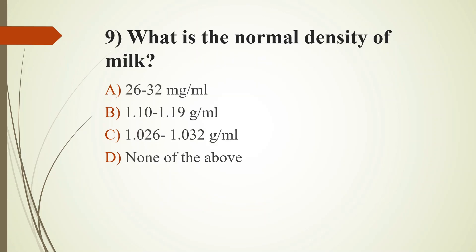Ninth question: What is the normal density of milk? Option A: 26 to 32 mg per ml; Option B: 1.10 to 1.19 g per ml; Option C: 1.026 to 1.032 g per ml; Option D: None of the above. The answer is Option C: 1.026 to 1.032 g per ml. The lactometer is used to detect the density of milk.